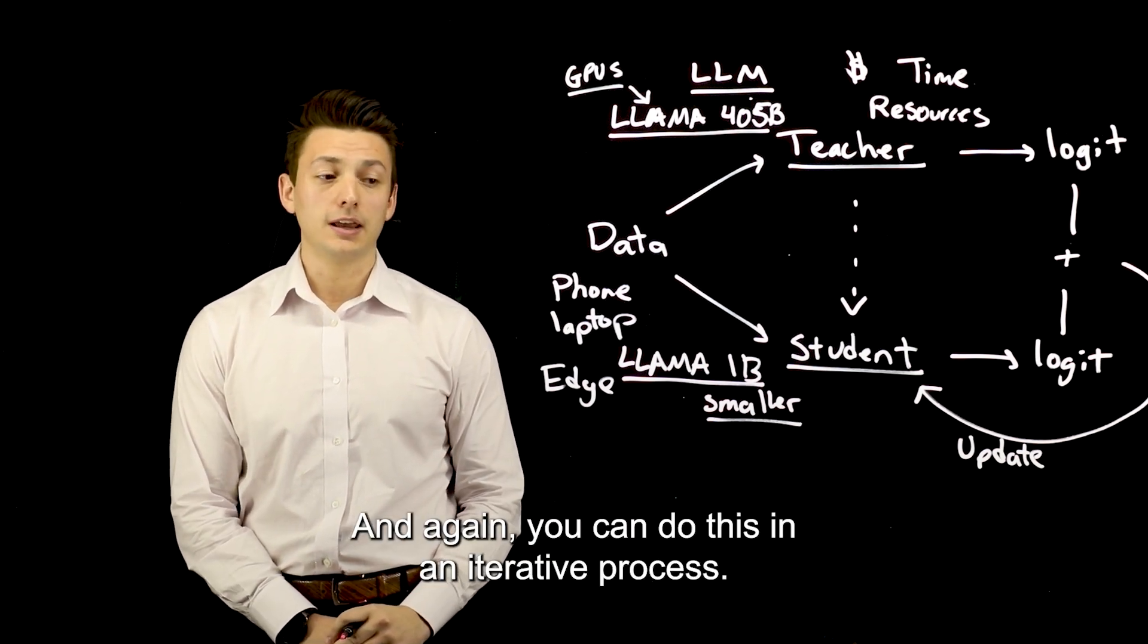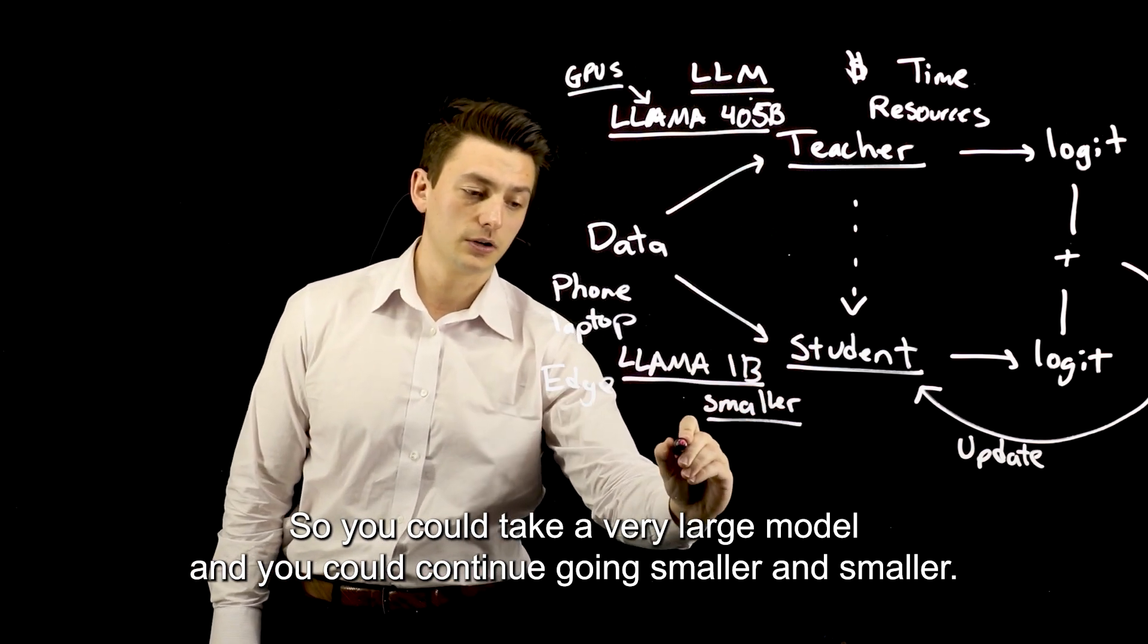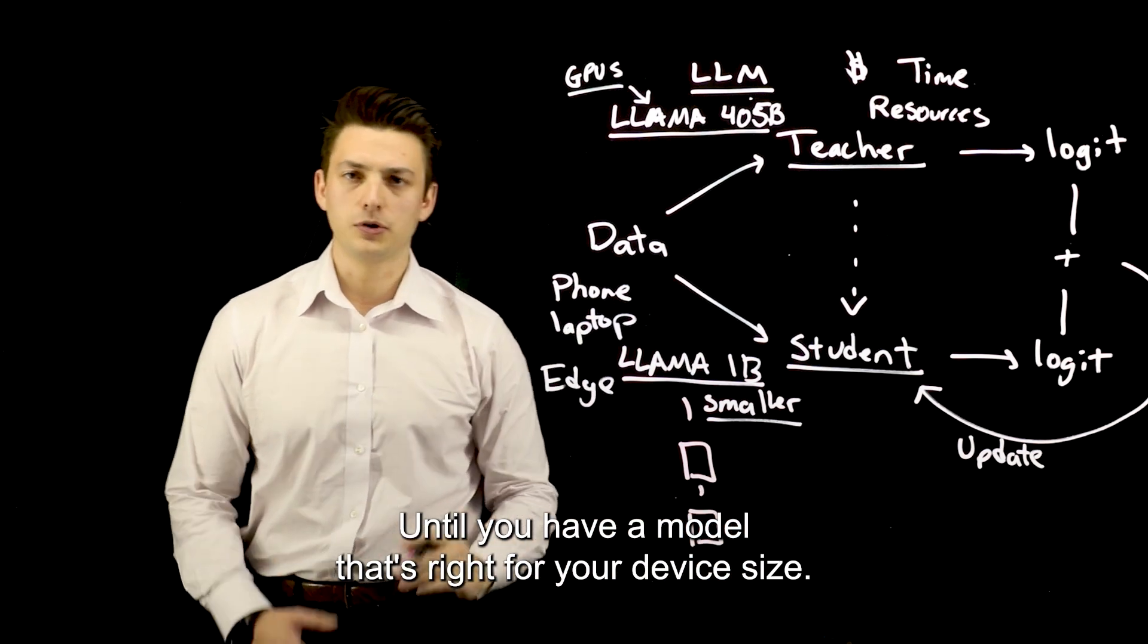And again, you can do this in an iterative process. So you could take a very large model and you could continue going smaller and smaller until you have a model that's right for your device size.